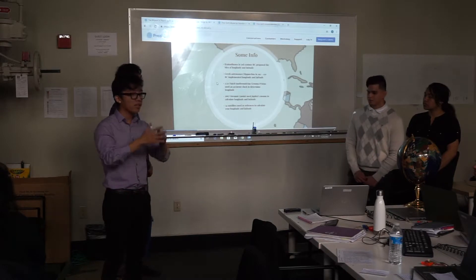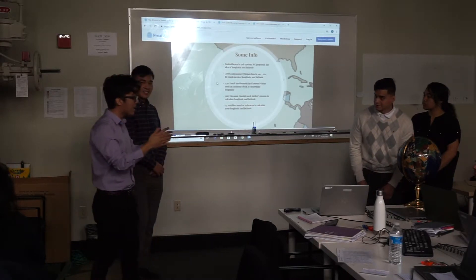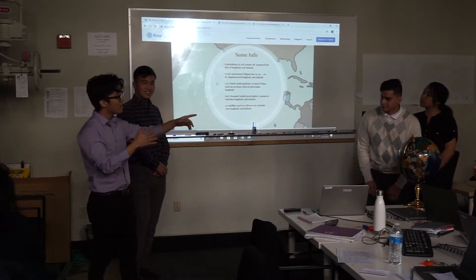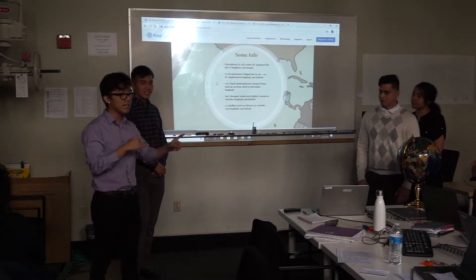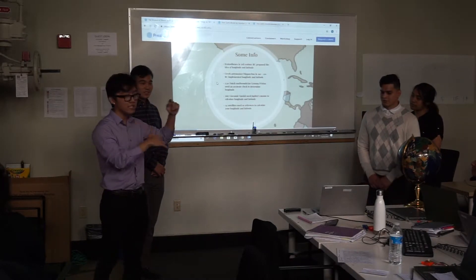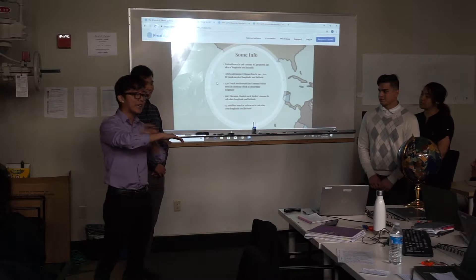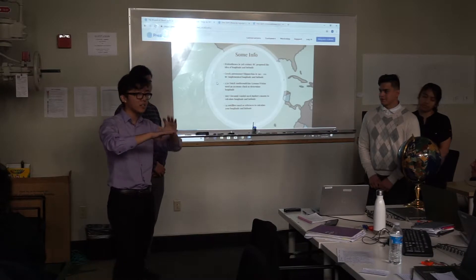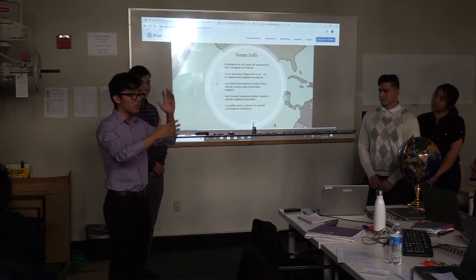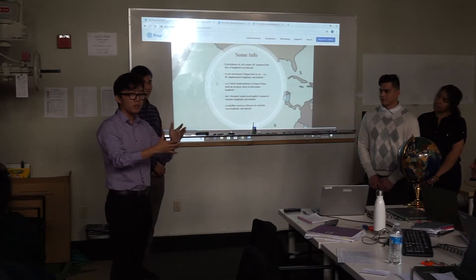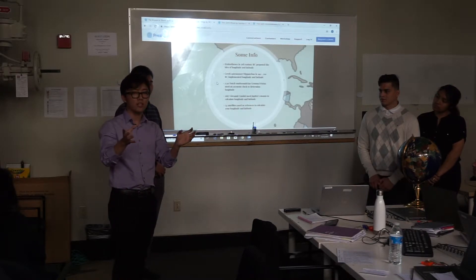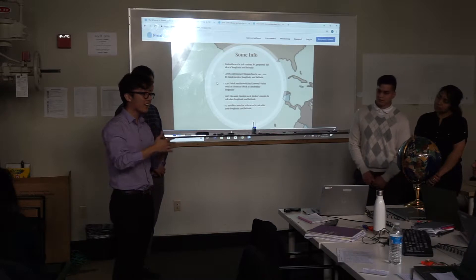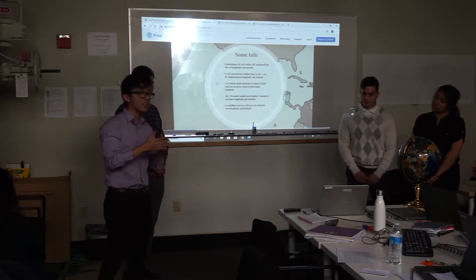A quick fun fact: there is a line opposite of the prime meridian called the international date line, running from the North Pole to the South Pole. The international date line differentiates one calendar day from the next calendar day. So when you're crossing the international date line, it's kind of like almost having a new sunrise.